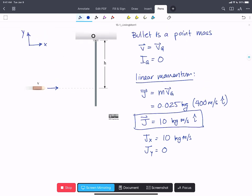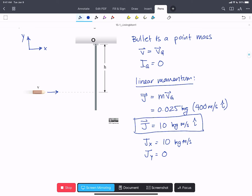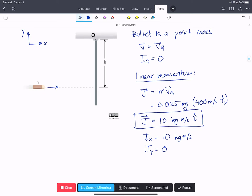So linear momentum, that's pretty simple. The bullet is traveling in a straight line. It isn't rotating. But we can also calculate angular momentum for this object. And it's going to be really important when we start doing conservation of momentum and impulse momentum later, to be able to calculate angular momentum for objects that are moving linearly.